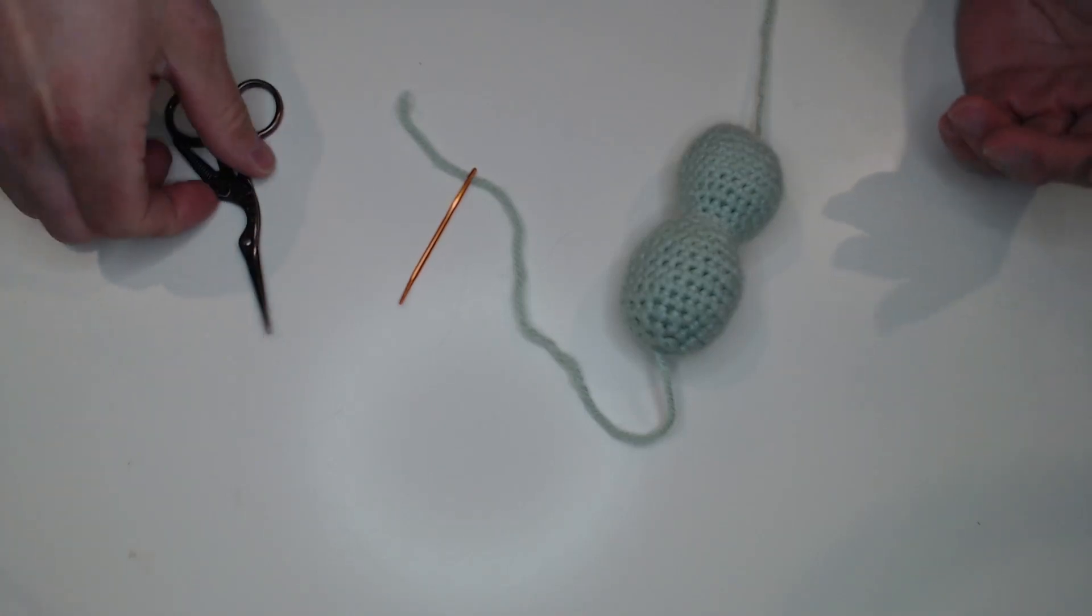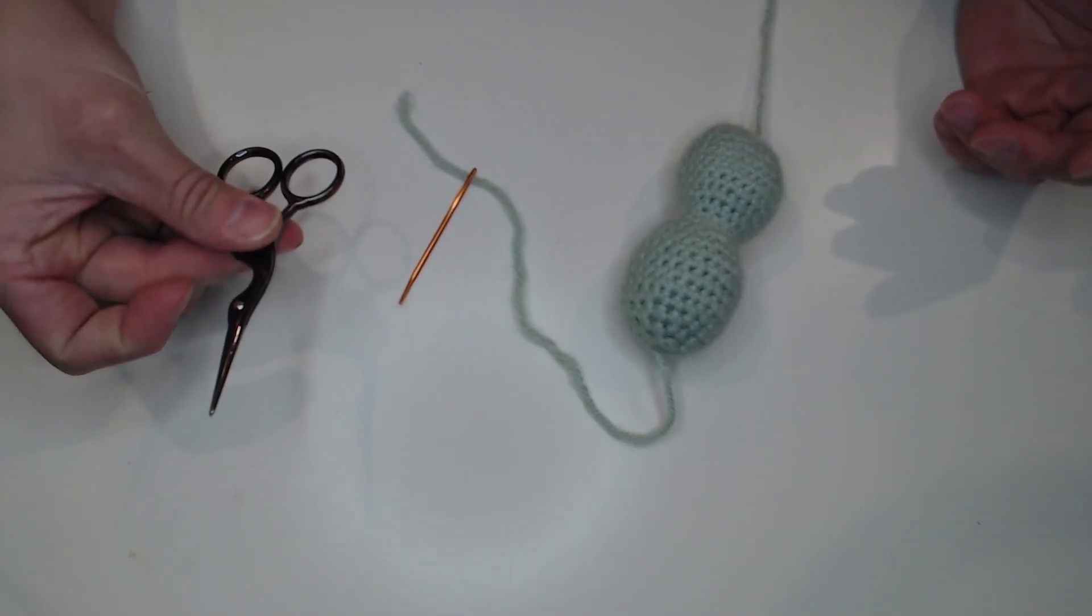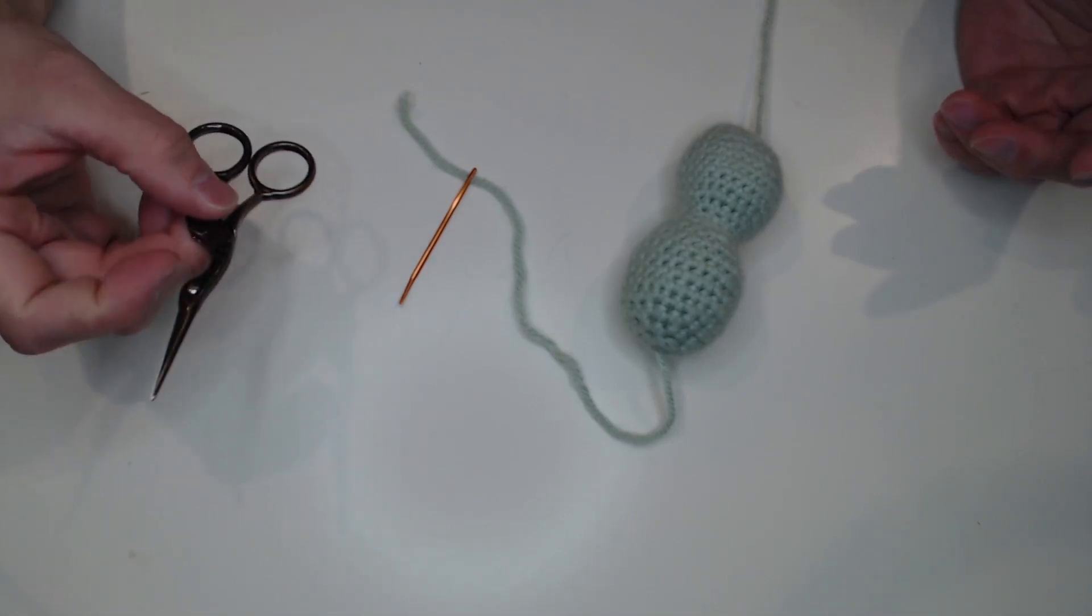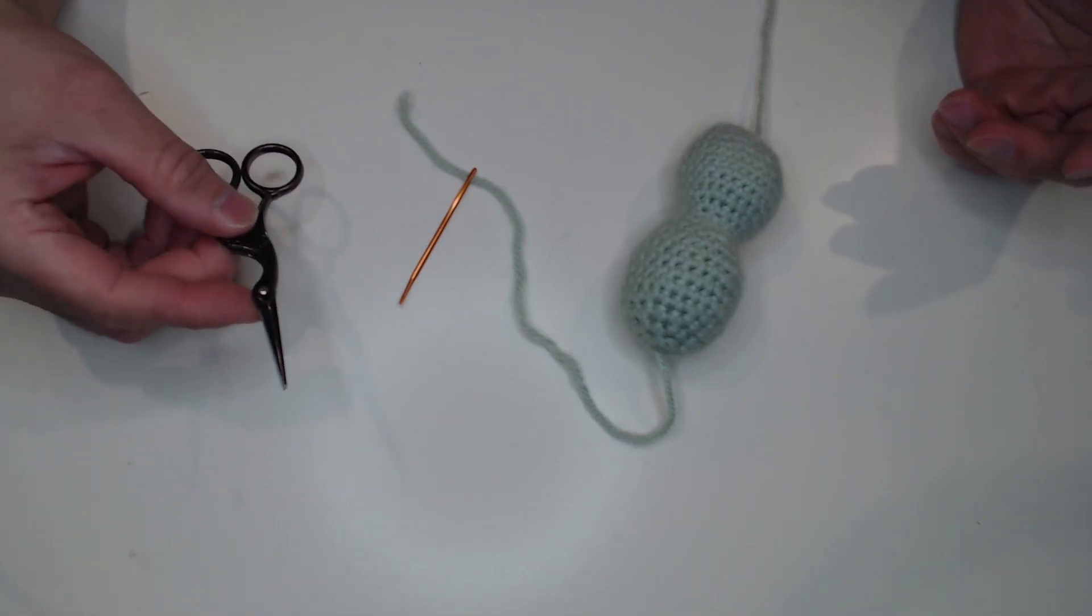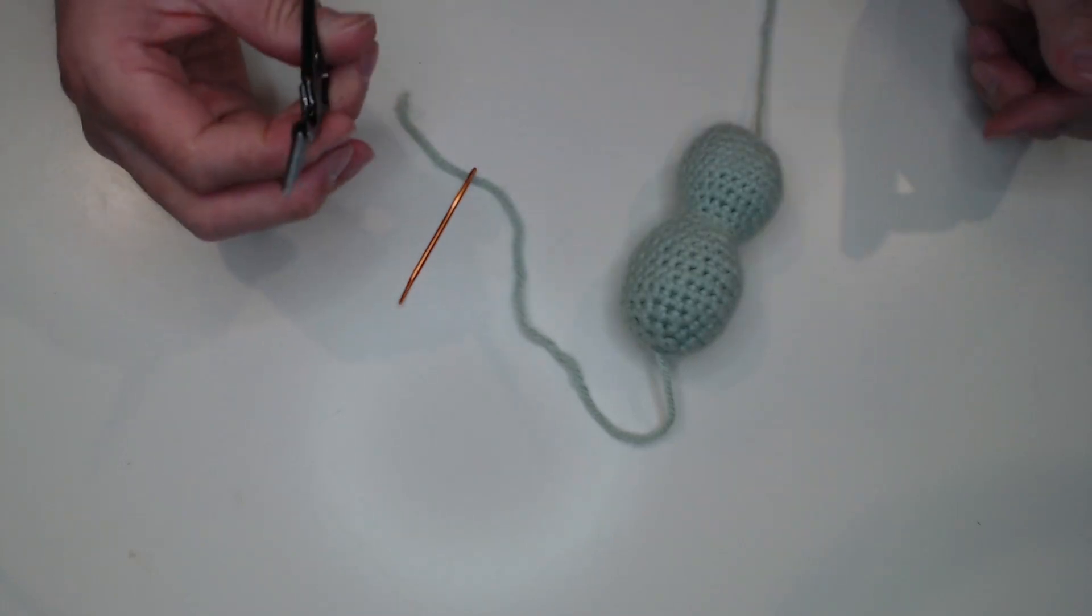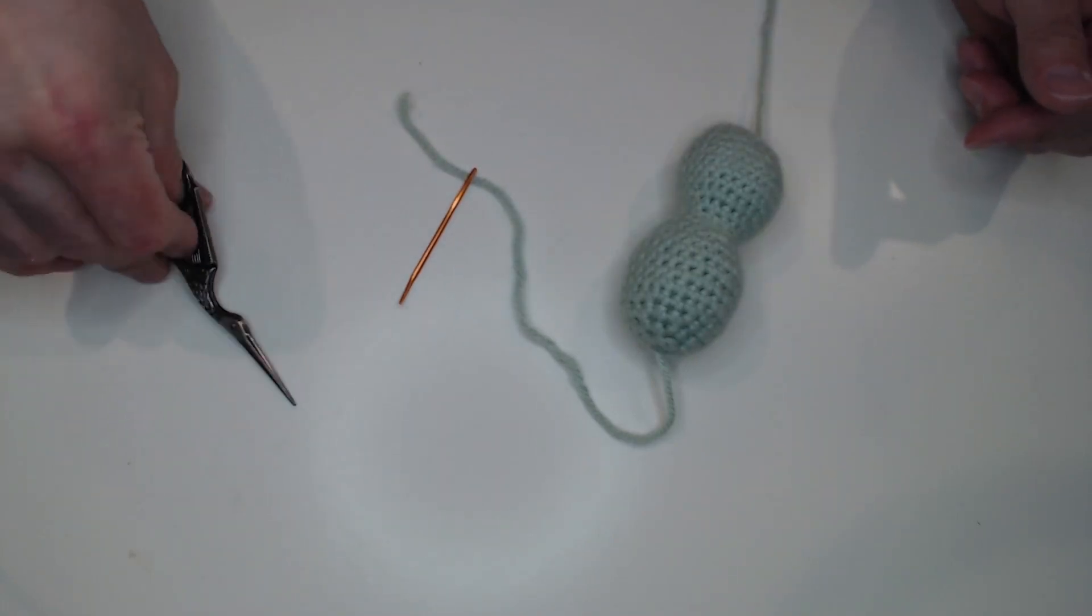So a few things you need. You need a nice pair of scissors. These cost about five bucks at any craft store. I like doing this versus other scissors just because they're super sharp and they're able to cut the yarn easily.